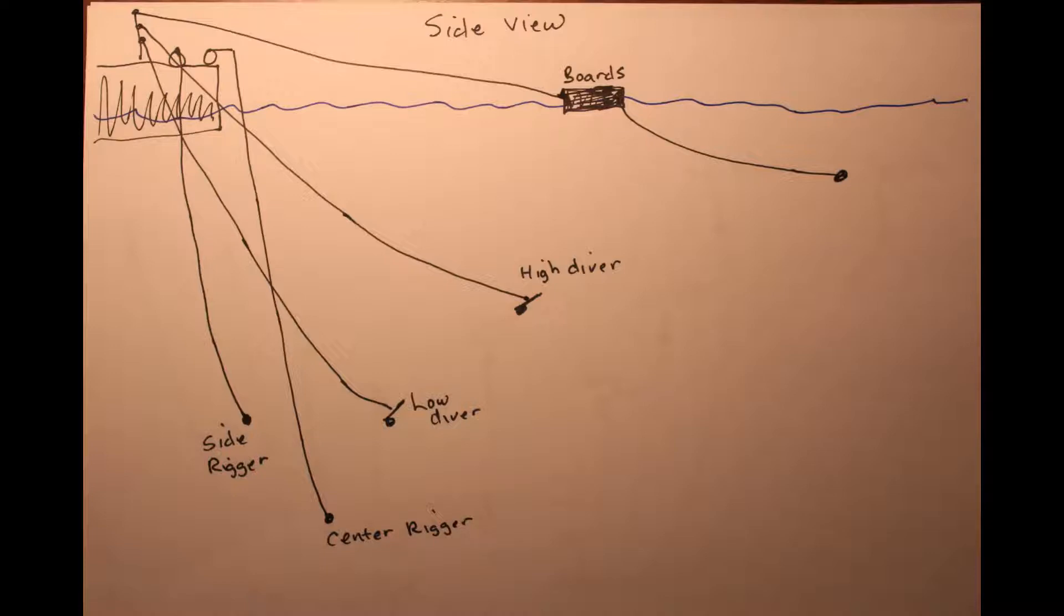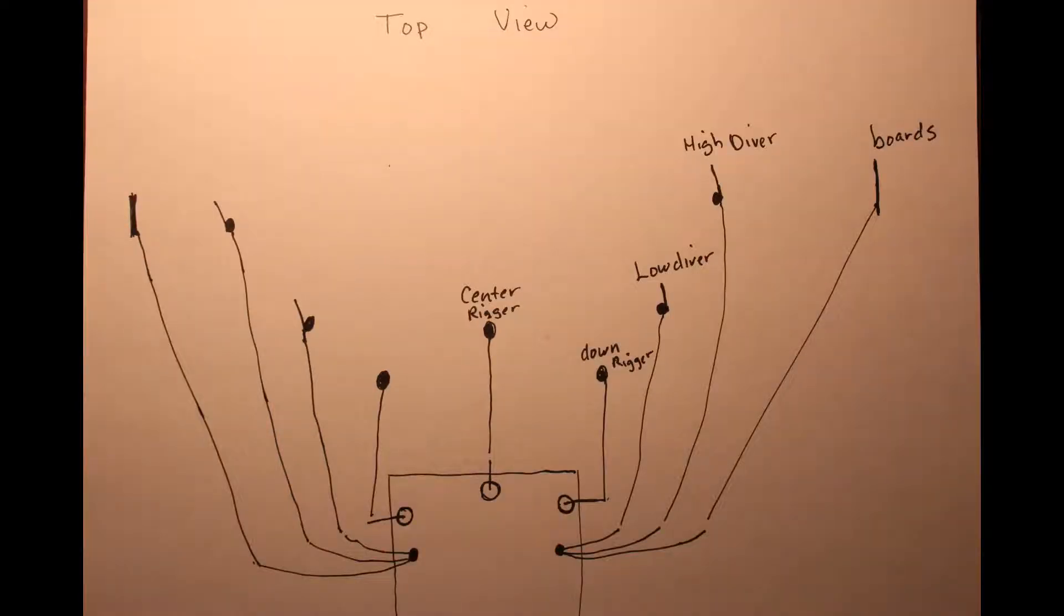And then you're going to have a little bit more blowback on your center rigger because it's usually set deeper than your side riggers. And then the top view kind of gives you an idea of where everything is in the water. And this is optimizing against tangles and optimizing to try to get as many lures in a wall the same distance behind the boat.